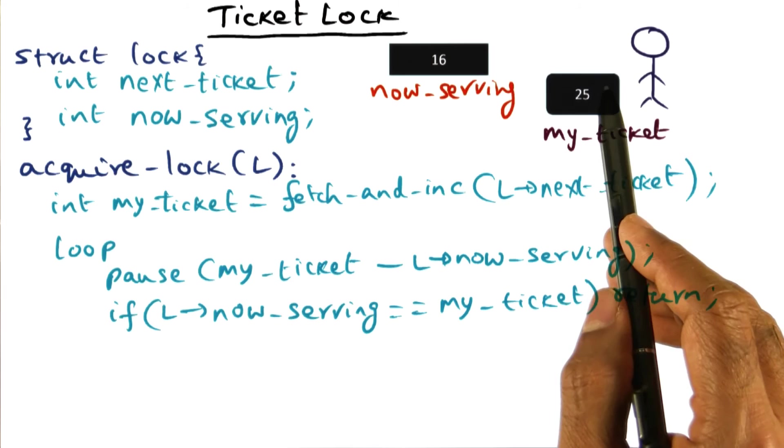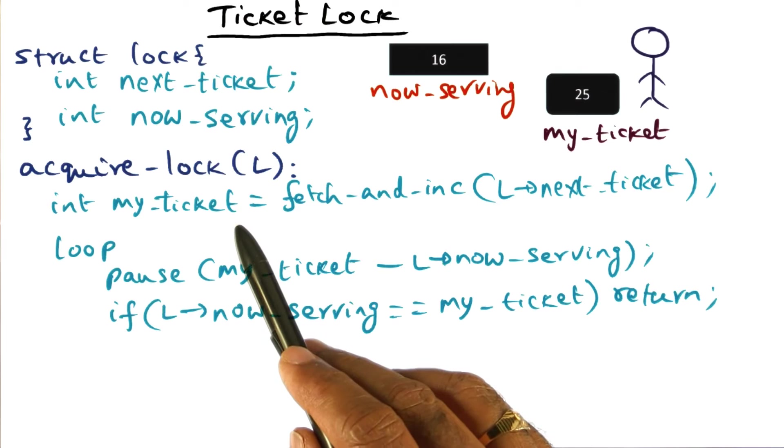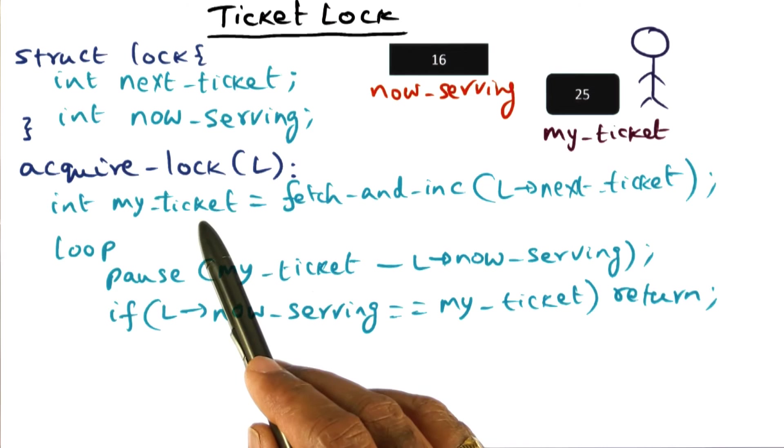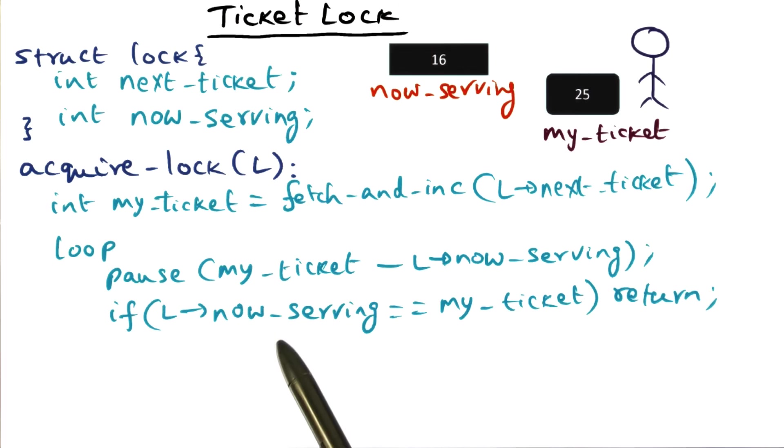And once I have my position marked as to when I can get my lock, I can then wait by procrastination. And what I'm doing here is pausing to see if I've won my lock by an amount that is proportional to the difference between my ticket value and who is being served currently. And after this amount of delay, I'm going to go and check if the now serving value equals my ticket value. And if it is, then I'm done. I can return. Otherwise, I go back to looping.